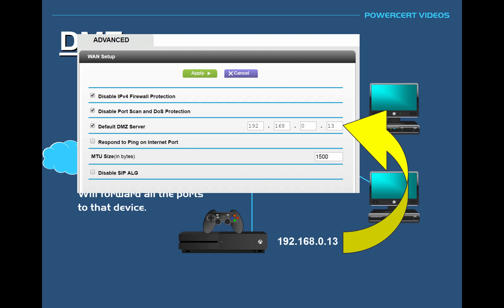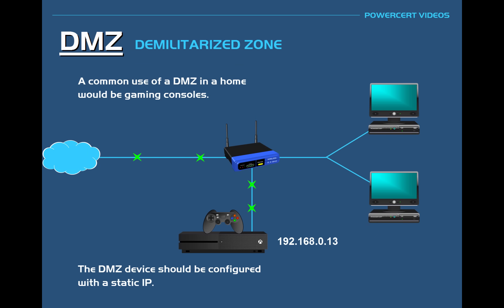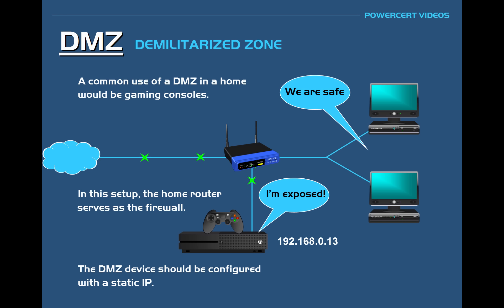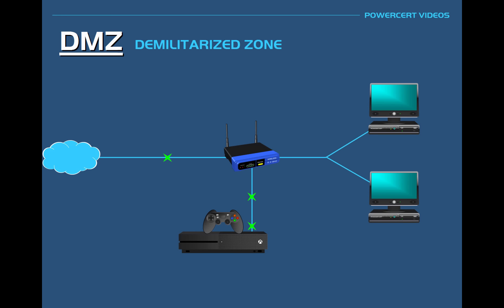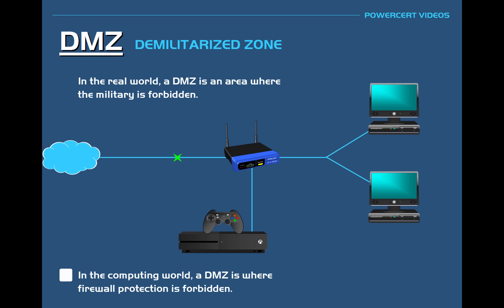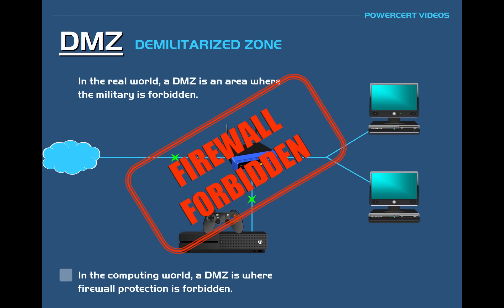It's also important to note that the device in the DMZ should be configured with a static IP rather than a dynamic IP. In this setup, the home router serves as the firewall, and the other computers are safe behind the router's firewall, but the gaming console is on the opposite side of the router's firewall, placed in the DMZ and fully exposed to the internet. In conclusion, that's what DMZ means — a Demilitarized Zone. In the real world it's an area where the military is forbidden; in the computing world, it's where firewall protection is forbidden.